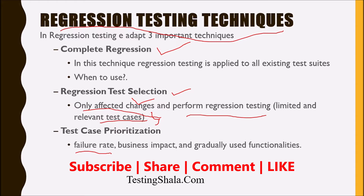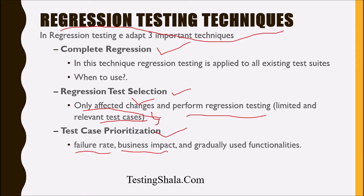The reason for a high failure rate can be many. We should identify and assess which area is getting more failures, then prioritize the test cases appropriately. We should also look at the business impact — if certain functionality stops working and there is a huge business impact, we should prioritize those test cases accordingly. The more frequently used functionality should also be considered when identifying and prioritizing test cases.